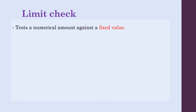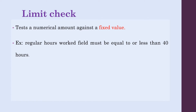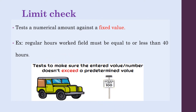Limit check tests a numerical amount against a fixed value — just like a speed limit. It ensures that the entered number doesn't exceed a predetermined value. The best example is that a regular hours worked field must be equal to or less than 40 hours, and not exceed more than that.